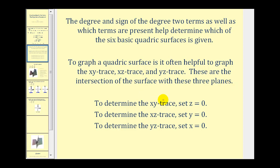We're going to determine the xy trace by setting z equal to zero. Then we'll find the xz trace by setting y equal to zero, and lastly, we'll find the yz trace by setting x equal to zero.